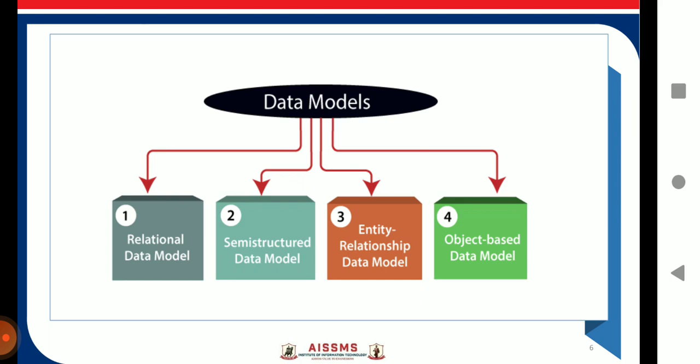Then the third is object based data model. This is an extension of an ER model with notions of functions, encapsulation and object entity. This model supports a rich system that includes structured and collection types. Then the fourth one is a semi-structured data model. This type of data model is different from other three data models.